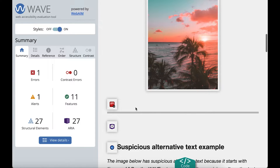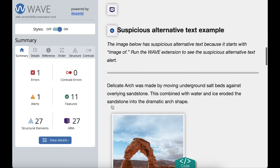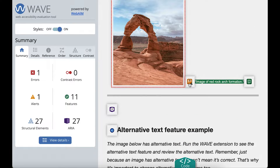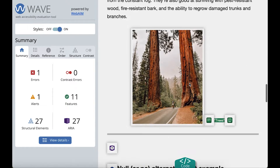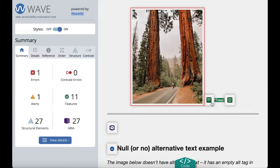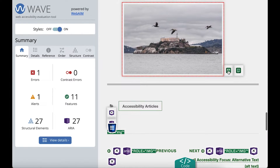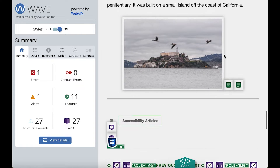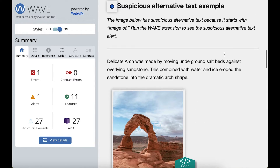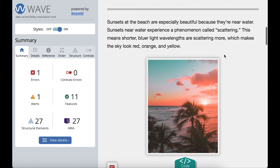Looking at the images, the first one has a red icon with an X, the second a yellow icon with a triangle and exclamation point, and the third and fourth have a green icon. So I have one error I need to fix, one alert I need to fix, and two alternative text features I need to review.